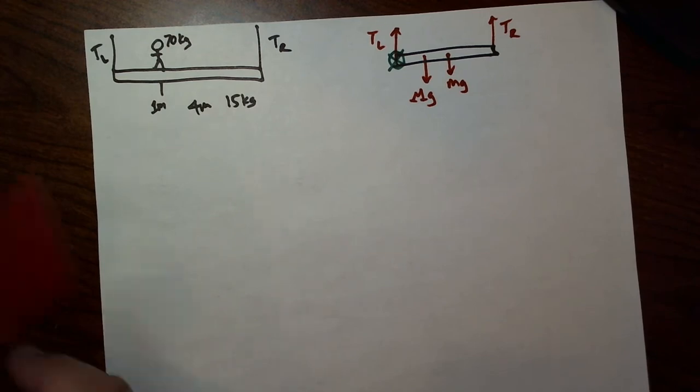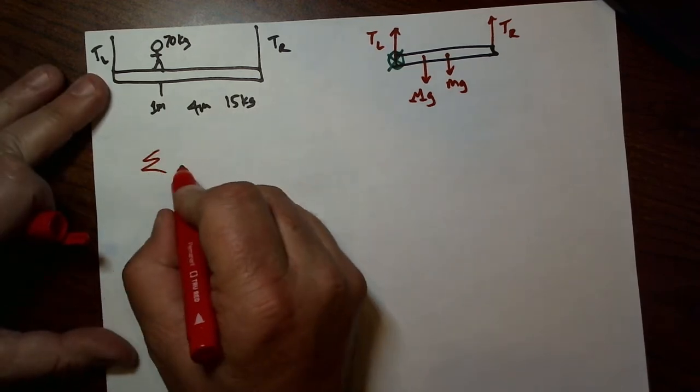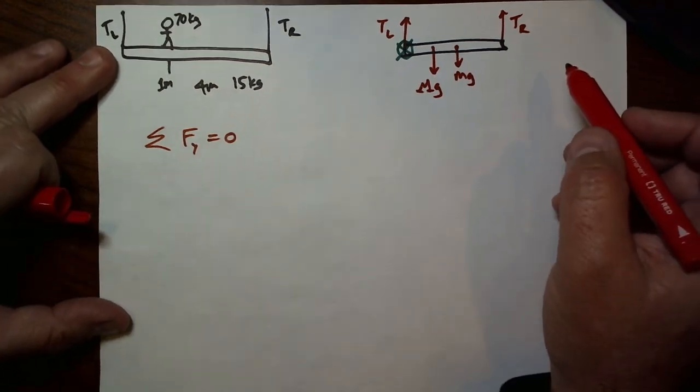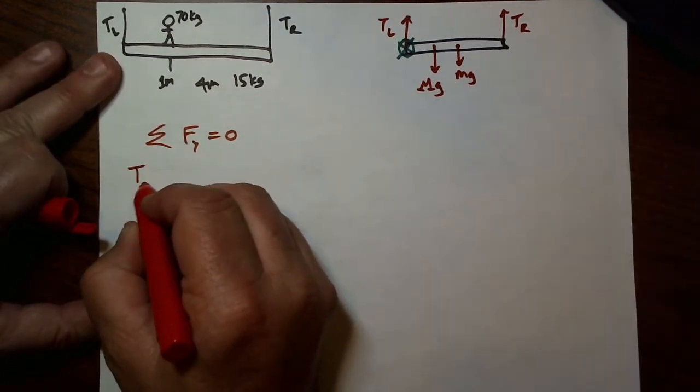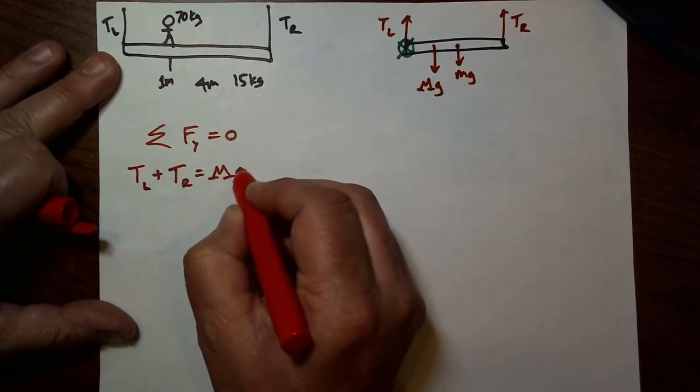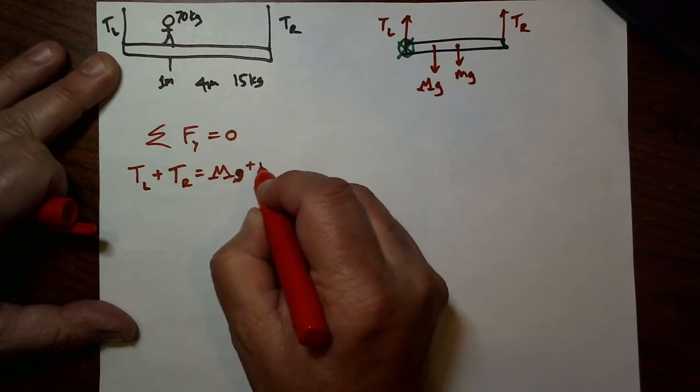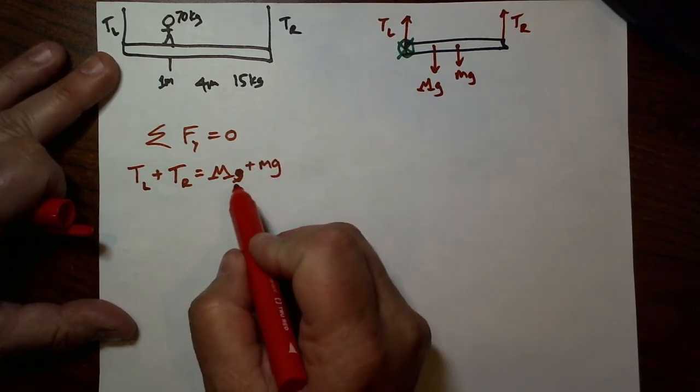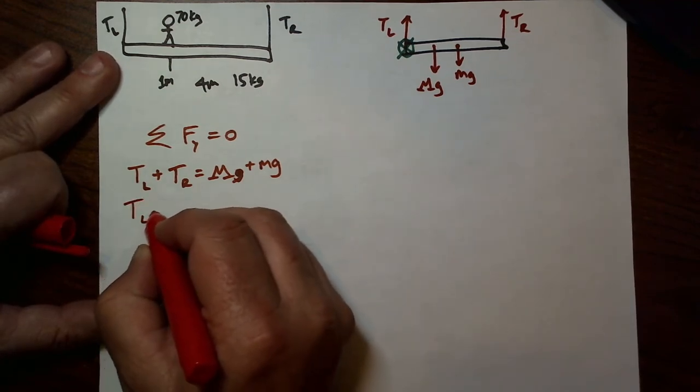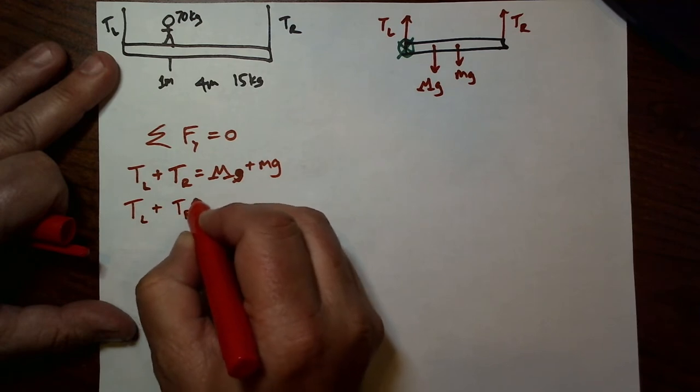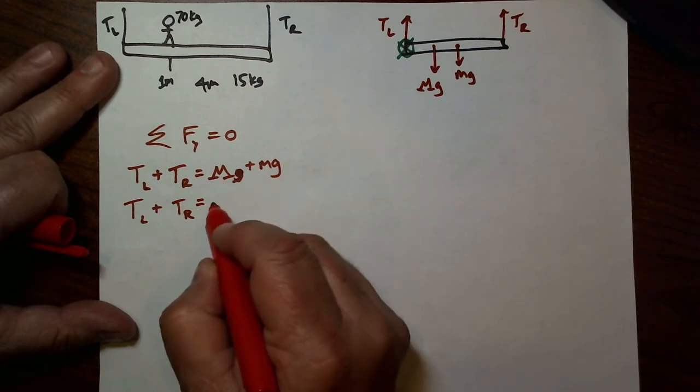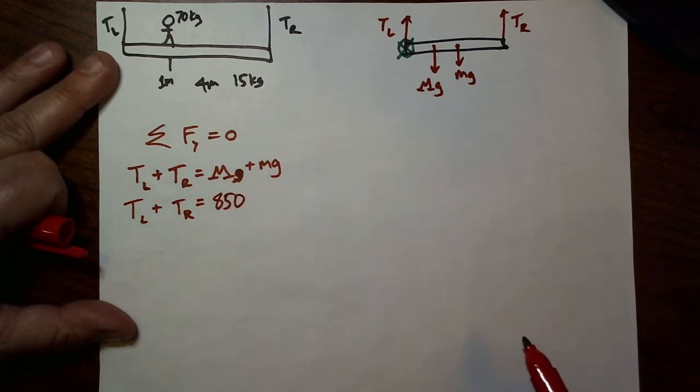Now the equations are a little more complicated. The sum of all the forces in the y direction must be 0. There are no forces in the x direction, so I'm getting off a little easier than normal. That means that TL plus TR equals Mg plus little mg. This doesn't go too far. TL plus TR equals 70 times 10 is 700, 15 times 10 is 150, so 700 plus 150 is 850. We didn't get too far.